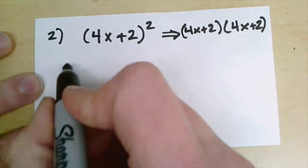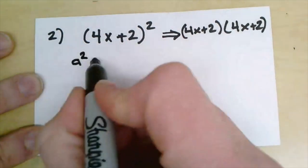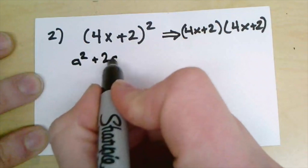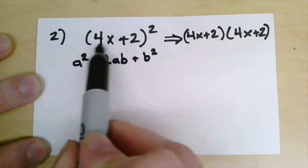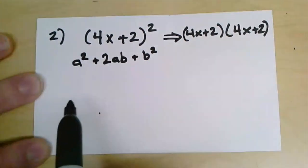What we can do is change it to the form we want it to match: a squared plus 2ab plus b squared. If we do this, the 4x is my a term and the 2 is my b term.